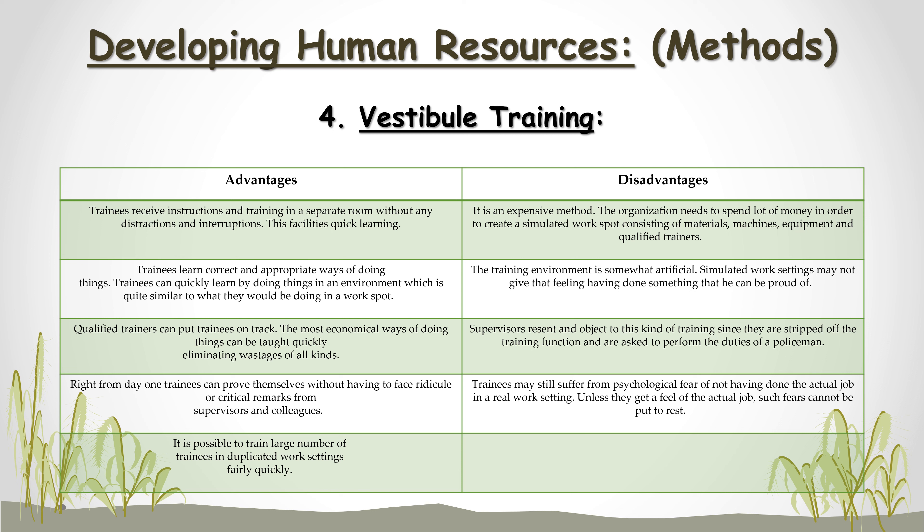The most economical ways of doing things can be taught quickly, eliminating wastages of all kinds. Right from day one, trainees can prove themselves without facing ridicule from supervisors and colleagues. It is possible to train a large number of trainees in duplicated work settings fairly quickly. Disadvantages. It is an expensive method — the organization needs to spend a lot of money to create a simulated work spot with materials, machines, equipment, and qualified trainers. The training environment is somewhat artificial. Supervisors may resent being stripped of the training function. Trainees may still suffer from psychological fear of not having done the actual job in a real work setting.